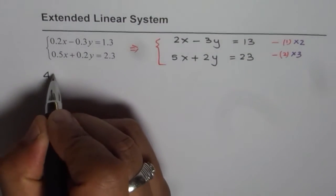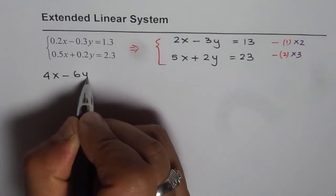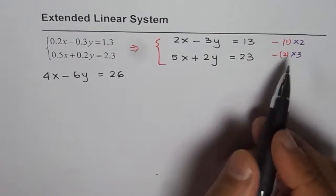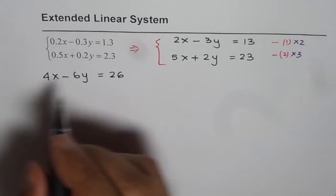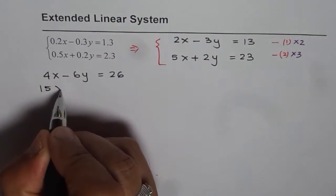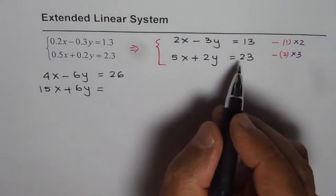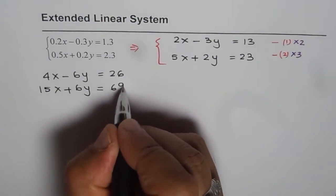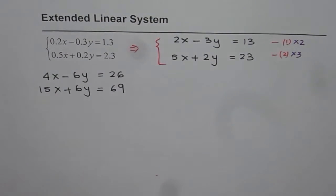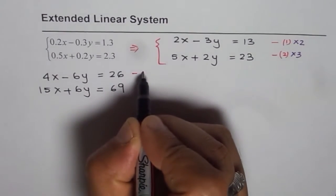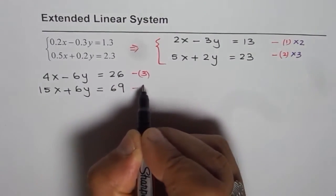You get 4x minus 6y equals to 26. And the second one by 3 will give us 15x plus 6y equals to 3 times 2 is 6, 3 times 3 is 9. So we have transformed equations. Let's call this as equation 3 and this as equation 4.